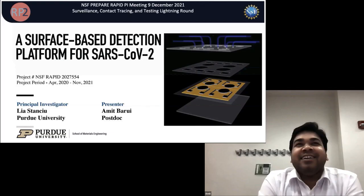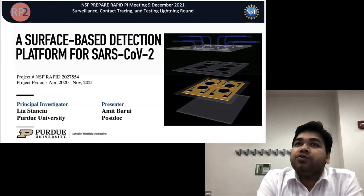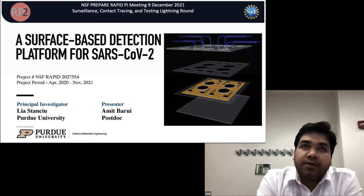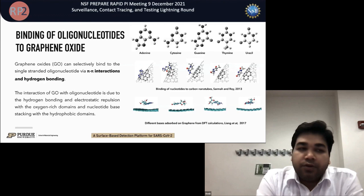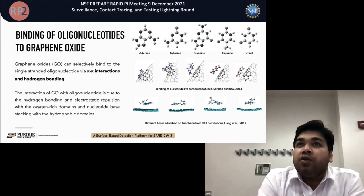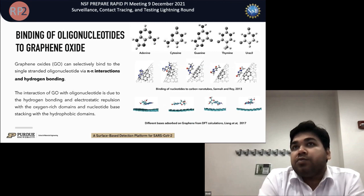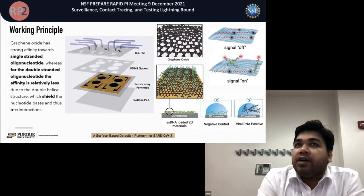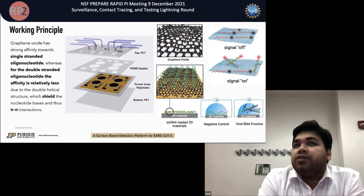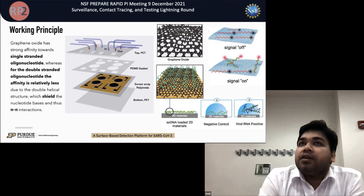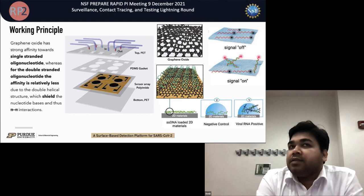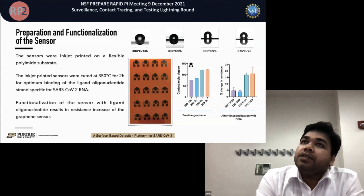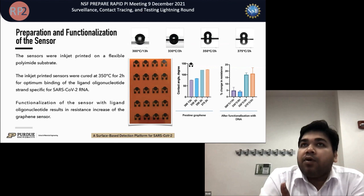Hello everyone. Today we are discussing a sensor for SARS-CoV-2 using 2D materials-based sensors — specifically graphene and graphene oxides, which have the ability to bind to oligonucleotides through pi-pi interactions and hydrogen bonds. We are building a microfluidic device integrated with a sensor that can detect SARS-CoV-2. Single-stranded DNA is used as a ligand, which binds to the graphene surface and lifts off when target viral RNA is present in the sample. We are optimizing how to bind more ligands to the surface and selectively lift them off.